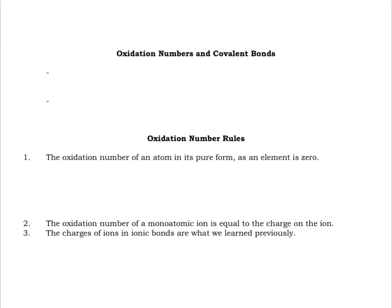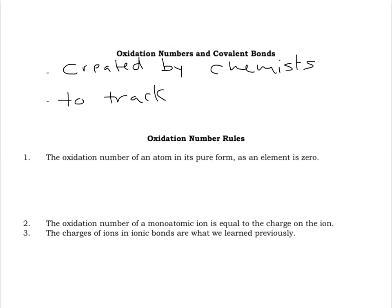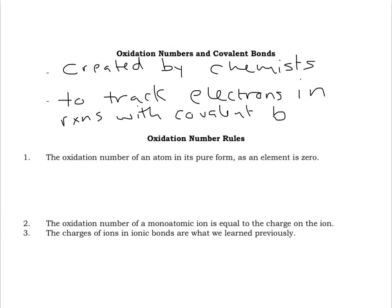We're going to continue our discussion of oxidation numbers today and look at how they are discovered in covalent bonds. The important thing to remember is that covalent bonds don't really have charges like ionic bonds do. So oxidation numbers are created by chemists to track the movement of electrons in reactions that have covalent bonds. There's lots of evidence that electrons move in reactions with covalent bonds, so chemists decided they had to come up with a system to systematically track that movement to better understand how the reactions actually work.